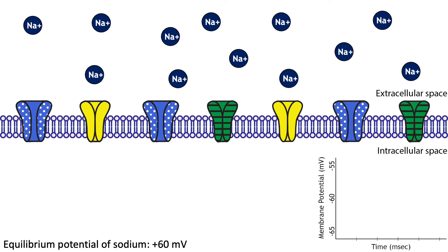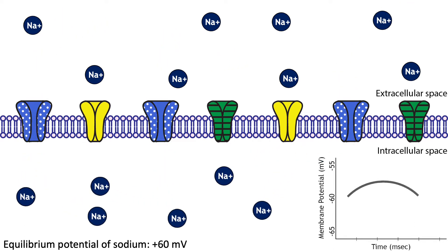An excitatory post-synaptic potential, or EPSP, occurs when sodium channels open in response to a stimulus. The electrochemical gradient drives sodium to rush into the cell. When sodium brings its positive charge into the cell, the cell's membrane potential becomes more positive, or depolarizes. This change is called a depolarization because the cell's membrane potential is moving toward zero millivolts, and the membrane is becoming less polarized. At zero millivolts, there is no potential or polarization across the membrane, so moving toward zero would be a decrease in potential. This depolarization increases the likelihood a neuron will be able to fire an action potential, which makes this ion flow excitatory.